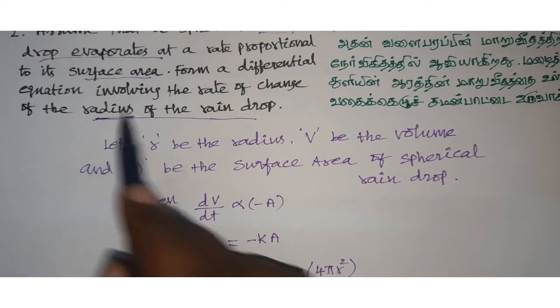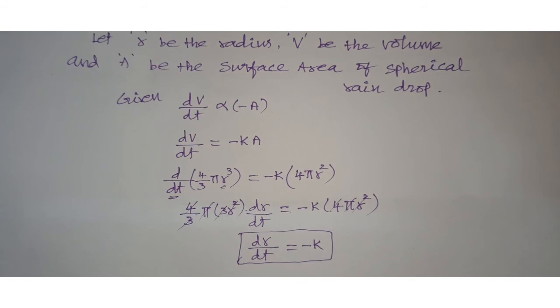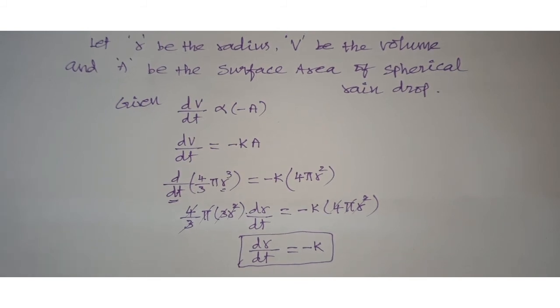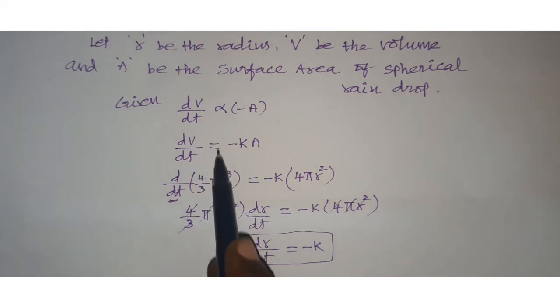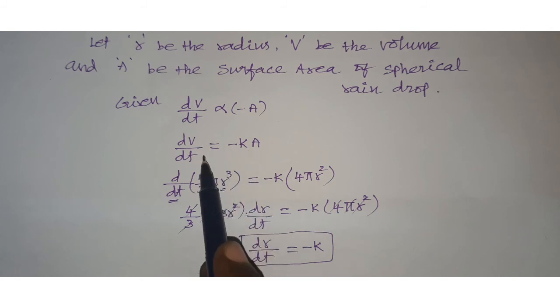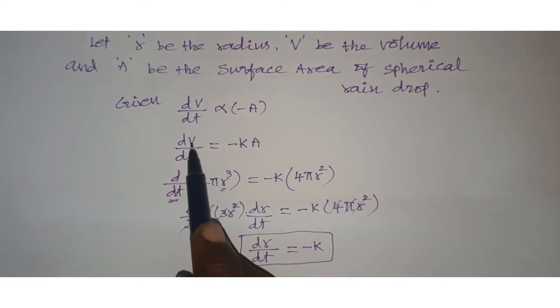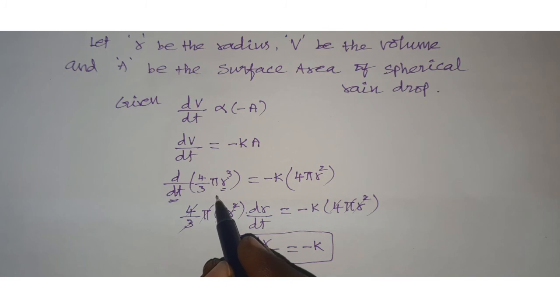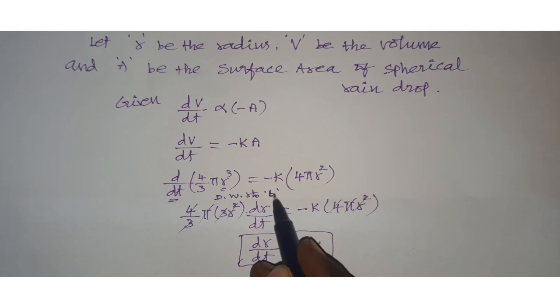The differential equation based on radius is dr/dt equals minus k. So we follow these steps: when volume rate of change is given, we substitute the formulas for volume and surface area in terms of radius, then differentiate with respect to t to get our result.